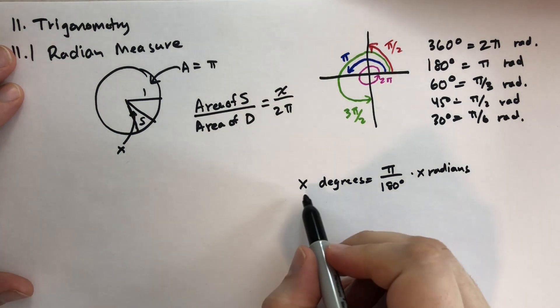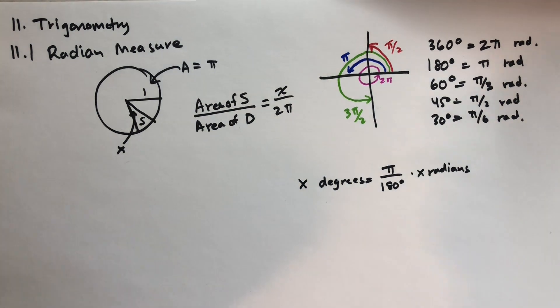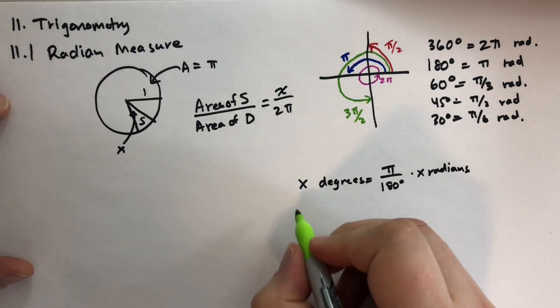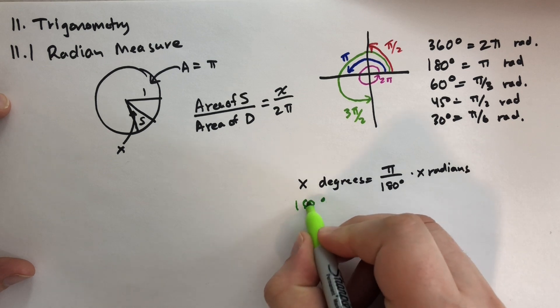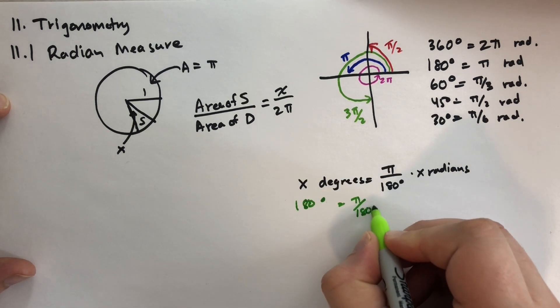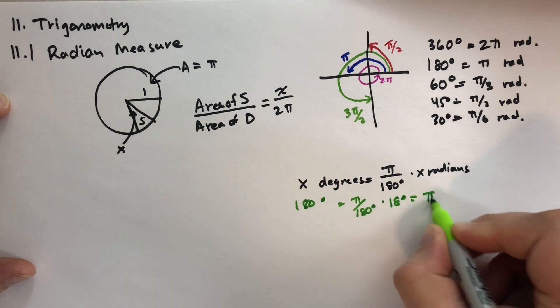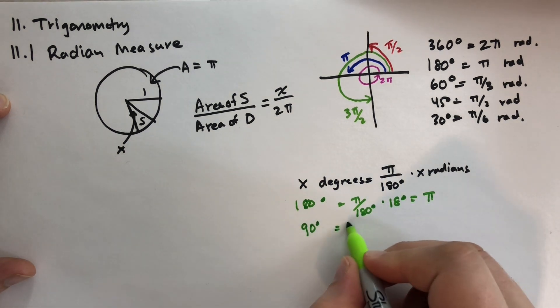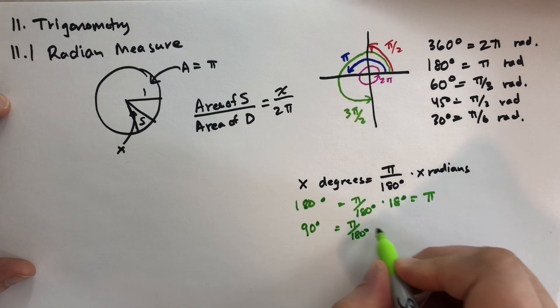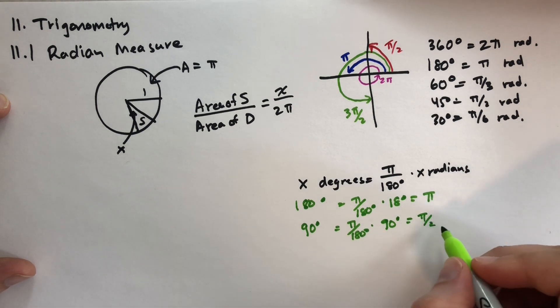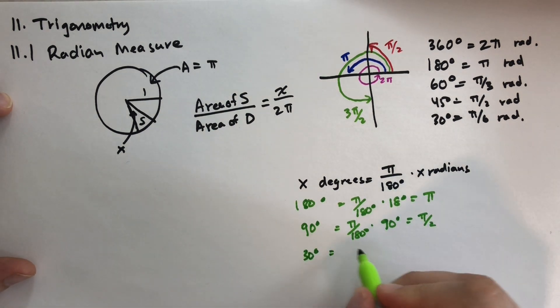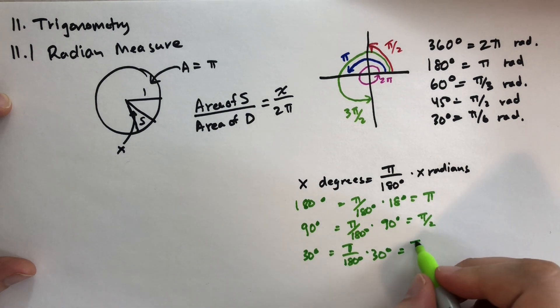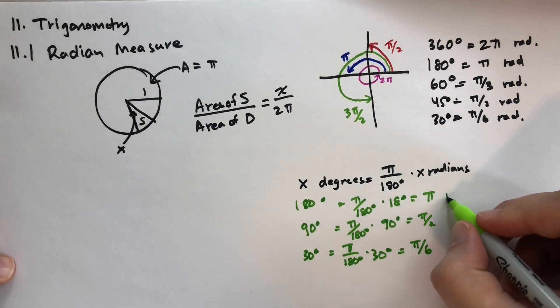So if we had 180 degrees, you just take pi over 180 times 180. Let me do this formula a couple times so that you're familiar with how it works. So if we had 180 degrees, that's pi over 180 degrees times 180, which is pi radians. If we had 90 degrees, that's pi over 180 degrees times 90 degrees, which is equal, let's see, 90 divided by 180 is pi over 2, right? And if we had 30 degrees, that's pi over 180 degrees times 30 degrees. So 3 divided by 18, that would be 1 over 6, pi over 6. Okay, radians. These are all rads.